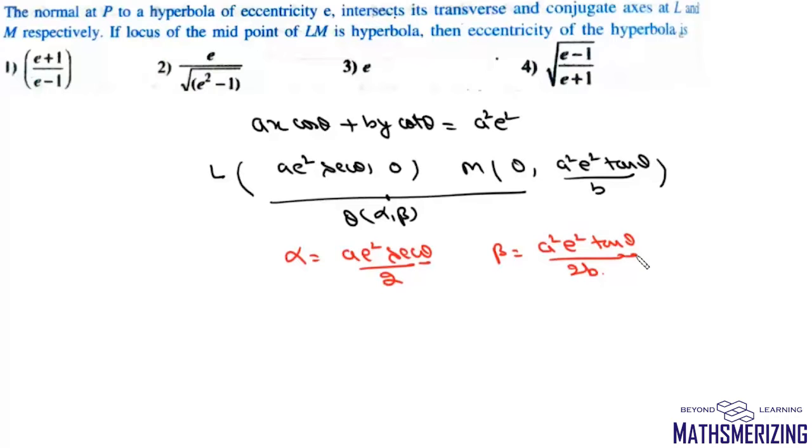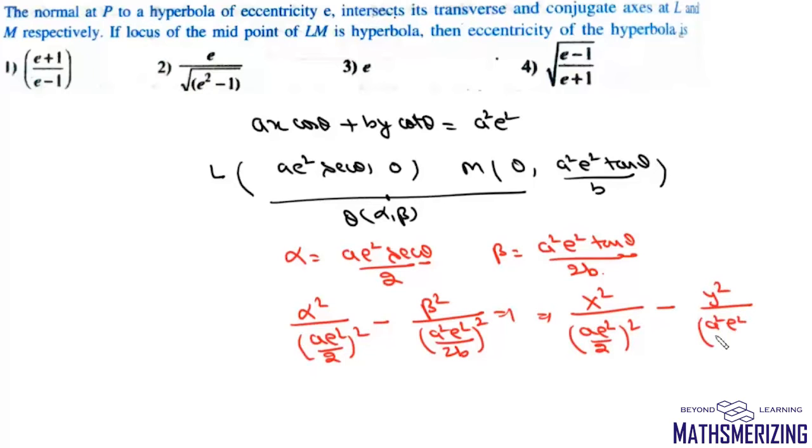Now we need to eliminate theta. We can write alpha squared upon (A E squared by 2) whole squared minus beta squared upon (A squared E squared upon 2B) whole squared equals 1. So the equation of this hyperbola will be X squared upon (A E squared by 2) squared minus Y squared upon (A squared E squared upon 2B) squared equals 1.